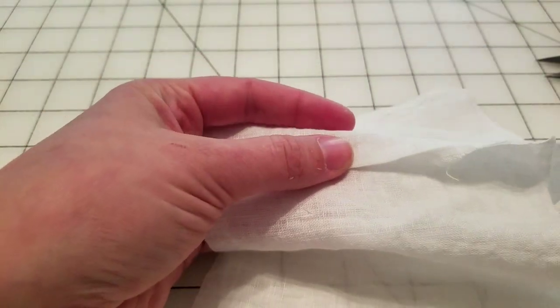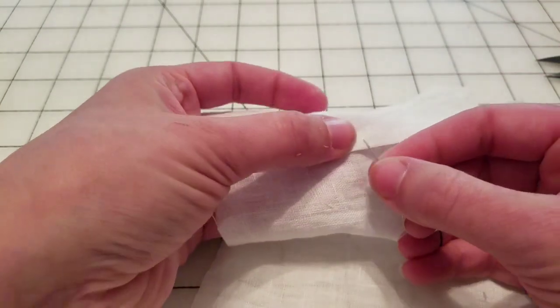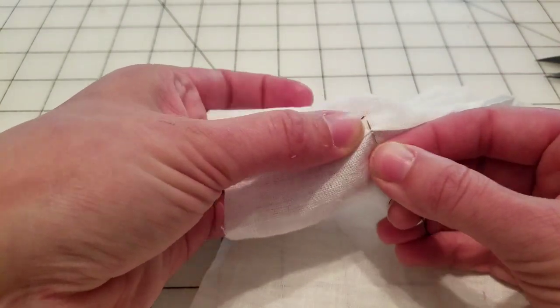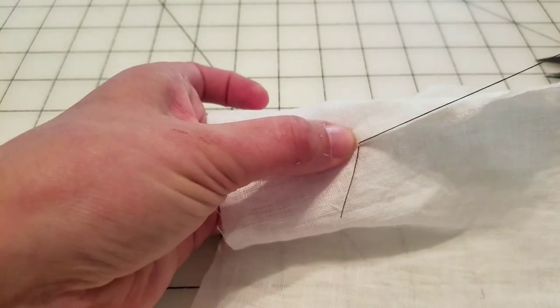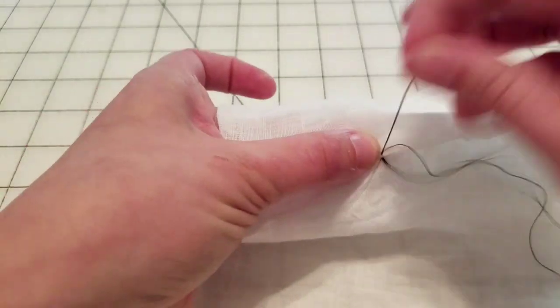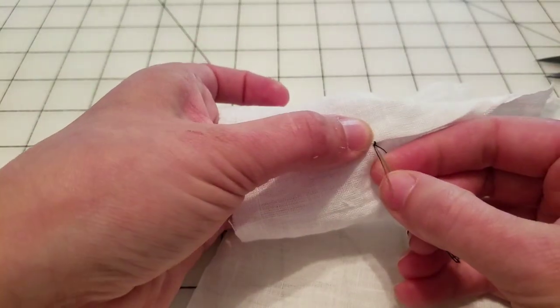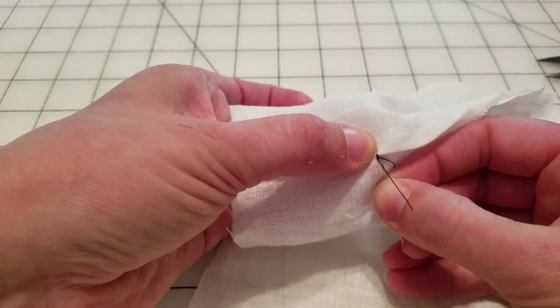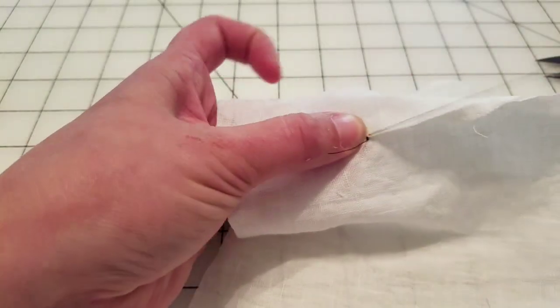Now we're going to fell the seam. And again, I'm just going to take three little stitches. And this works the same way if you're doing it from the outside where your seam will show or from the inside where it won't.